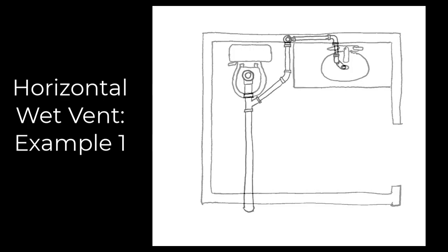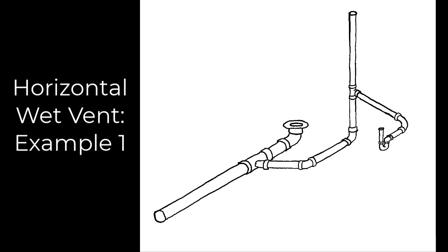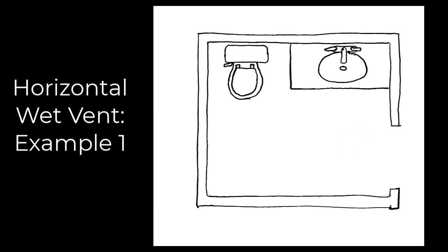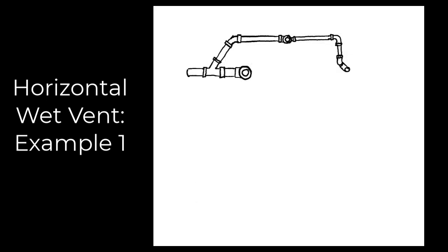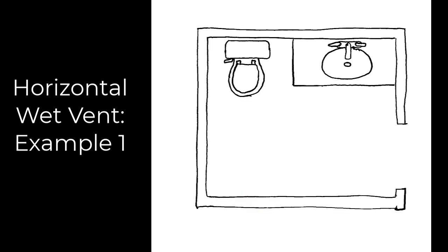Let's look at a half bathroom first — a simple toilet and a lav. In this case we have a three-inch line going to the toilet. It branches off and the drain for the lavatory is being used both as a drain and a vent for the toilet. The way we pipe a horizontal wet vent may vary depending on the approach, so we can come to those fixtures from a different angle. In this case we come to the toilet from the left side, but similarly we branch off and the lavatory drain serves as both a drain and a vent for the toilet.